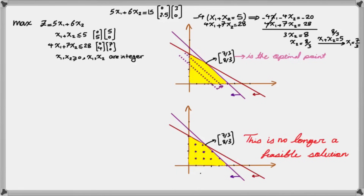The problem has become very complicated because the solution space is no longer a convex set, which brings a lot of complexity to the solution method. Also importantly, the integer solution is not obtained by simply rounding down 7/3 and 8/3. For example, in this problem, the optimal solution is not point (2,2), which would be the result of rounding down 7/3 and 8/3.